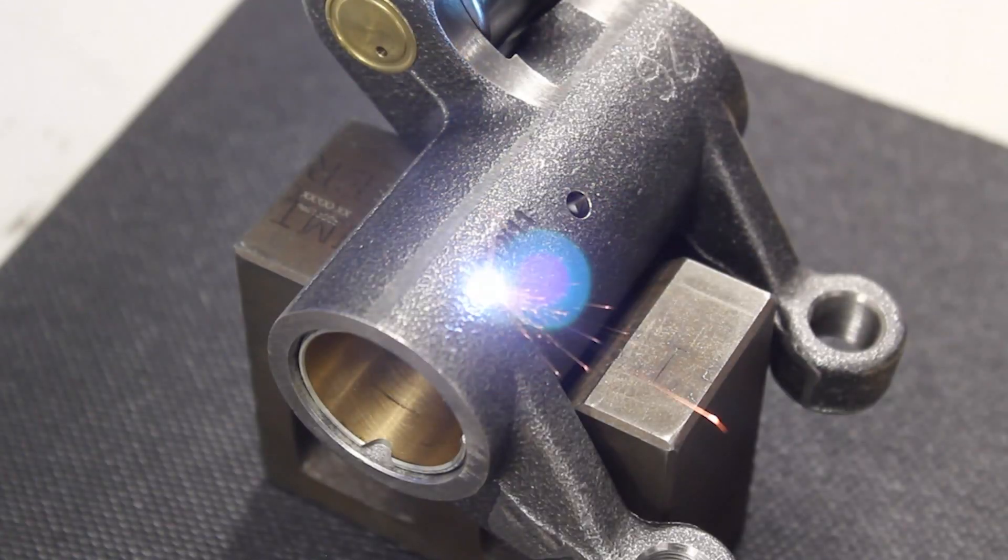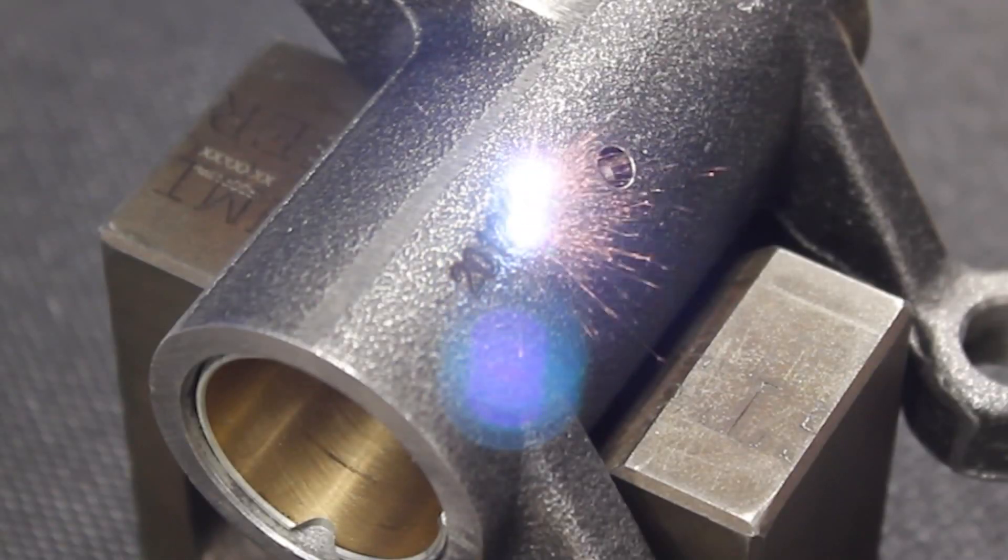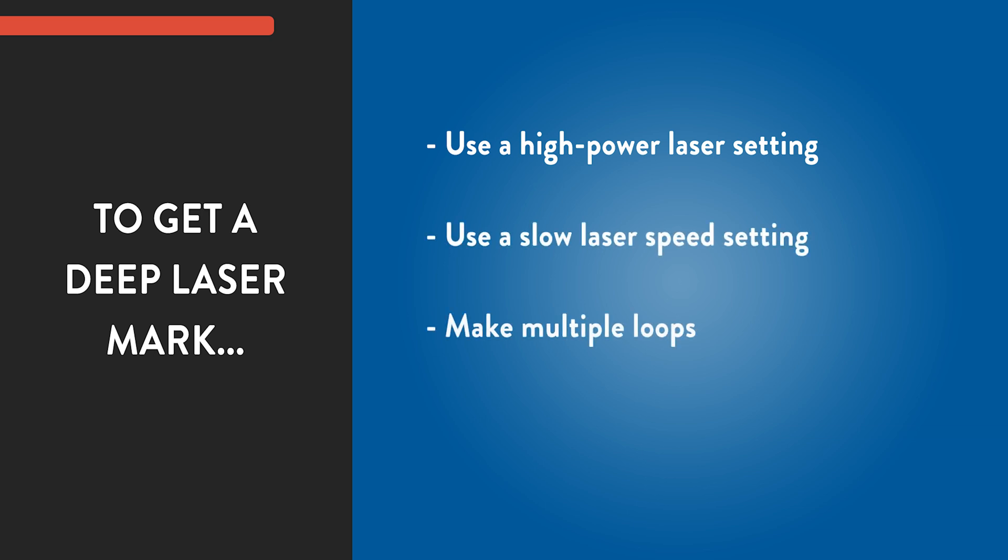Now that we know why you might want a deep laser engraved mark, let's talk about how to set up your laser to get one. To get a deep laser mark, you can use a higher power setting, use a slow speed setting, make multiple loops or passes, or do a combination of all of these options.